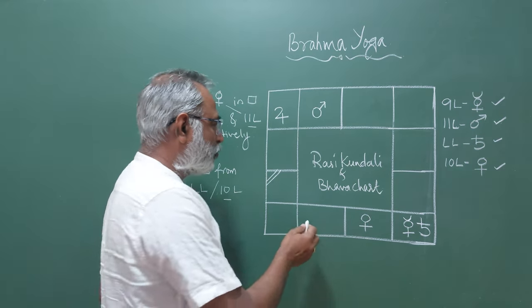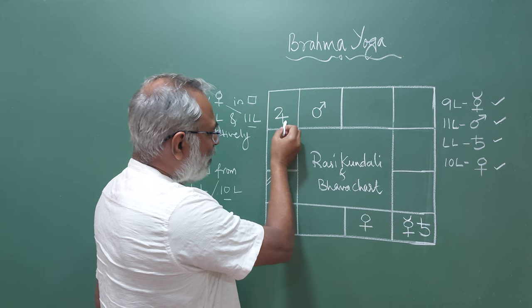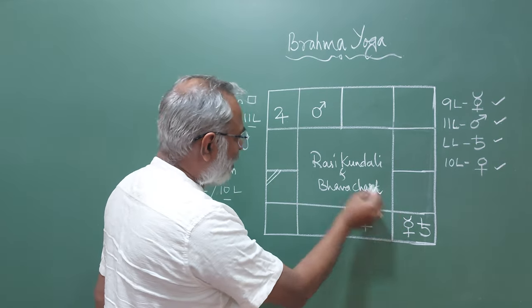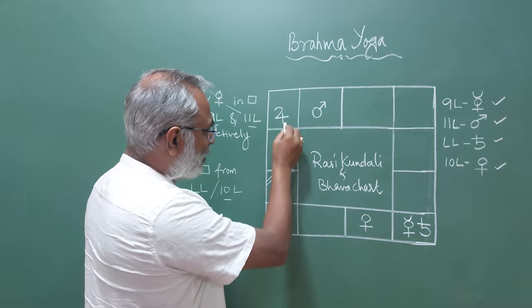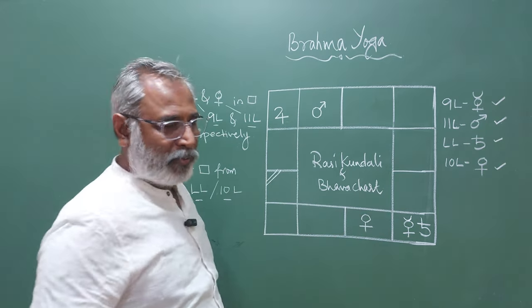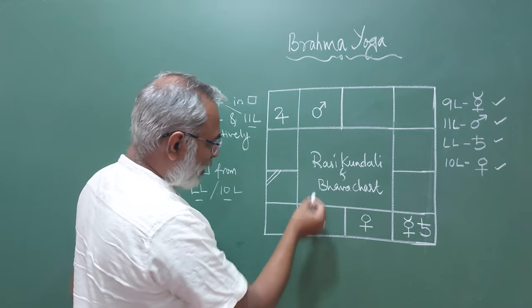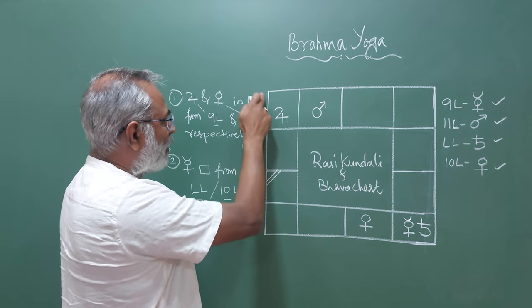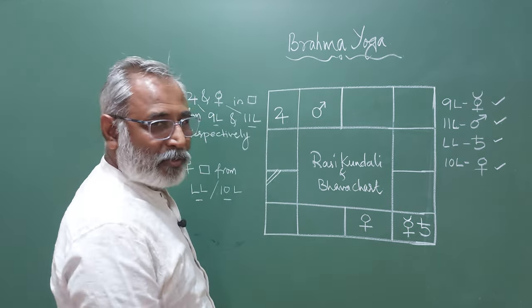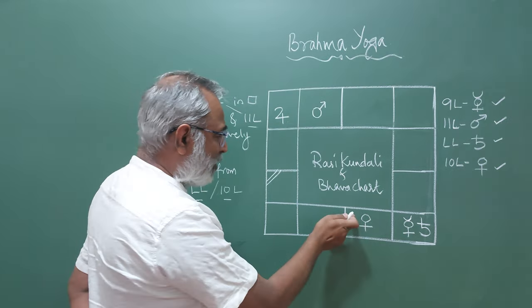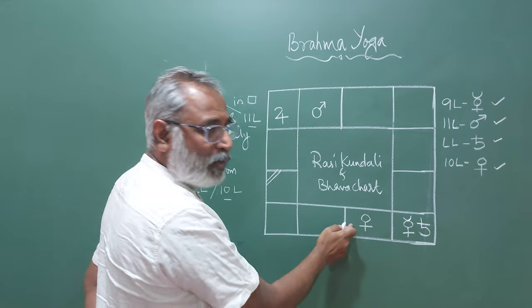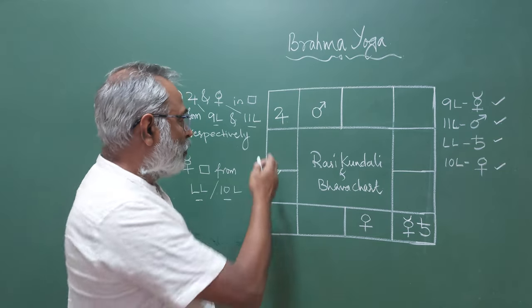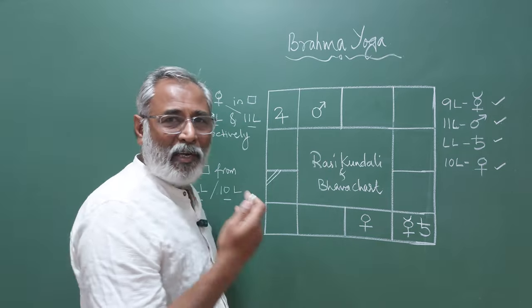So here, Jupiter is aspected by the ninth Lord. There is a direct aspect and it is a Kendra. Kendra, that is, it is a quadrant because it is the seventh house. Mars is the eleventh Lord and Venus has to be aspected or to be posited in a Kendra from the eleventh Lord. So here, not only being posited in a Kendra, there is a direct aspect of Mars over Venus. So Venus and Mars are in mutual Kendras, quadrants. Jupiter and Mercury are in mutual quadrants.